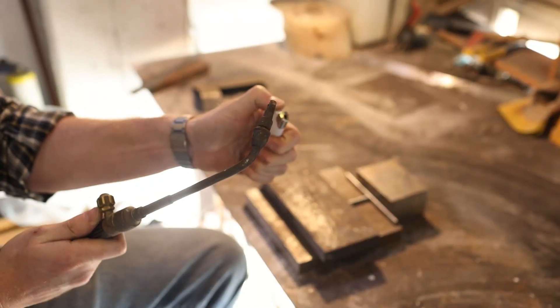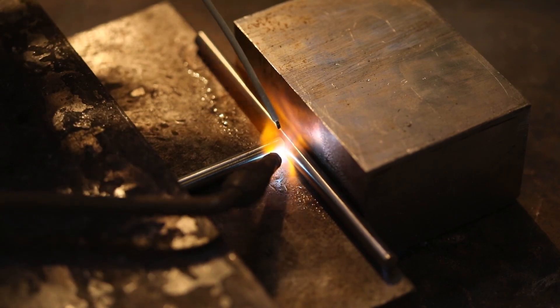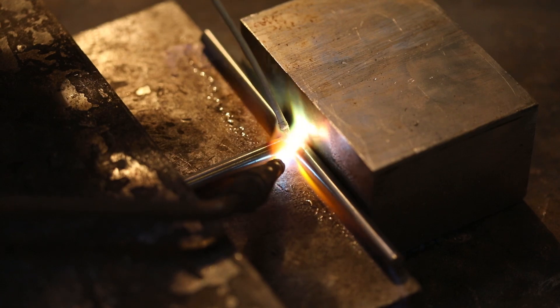Using an oxypropane torch, I heated the joint until it was glowing red. Then, just attached it with some flux coated silver rod. It's amazing how little silver you need in order to make a really strong bond.